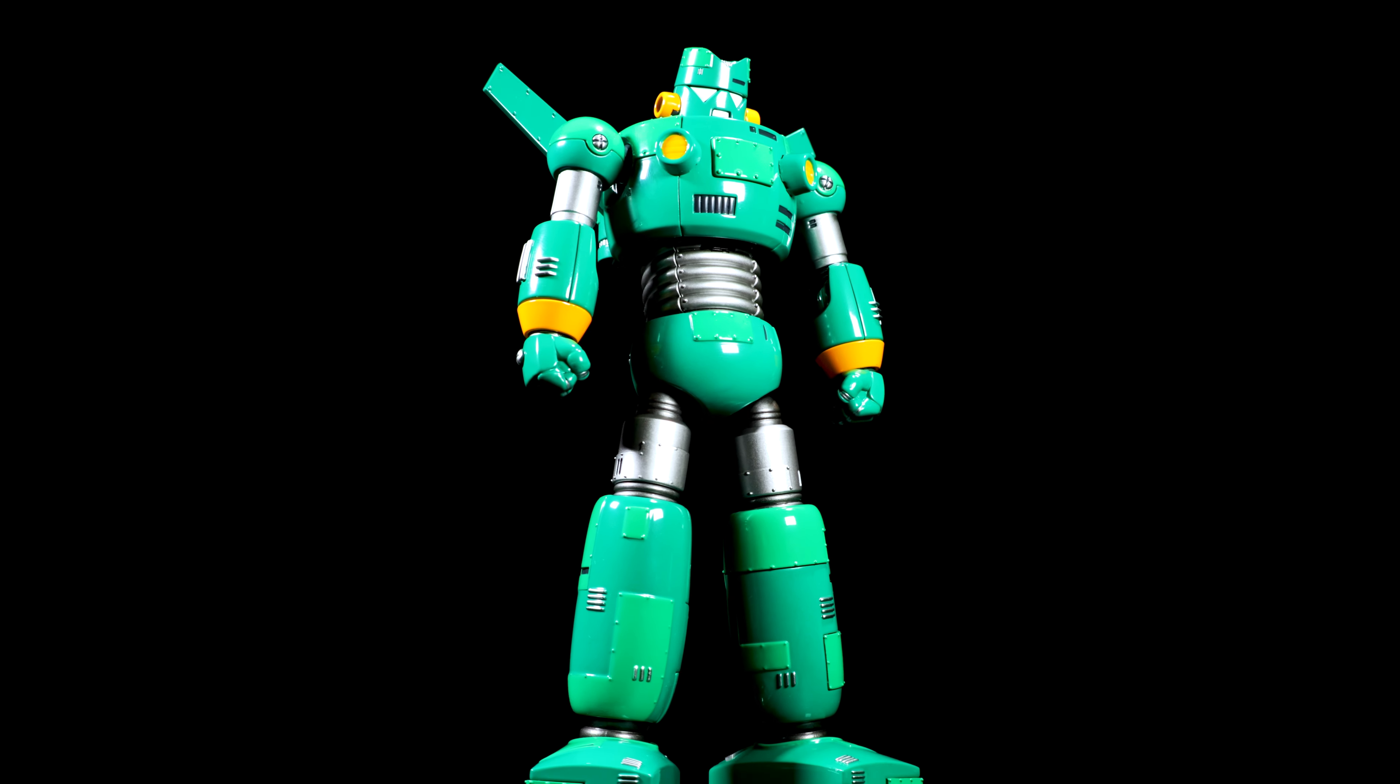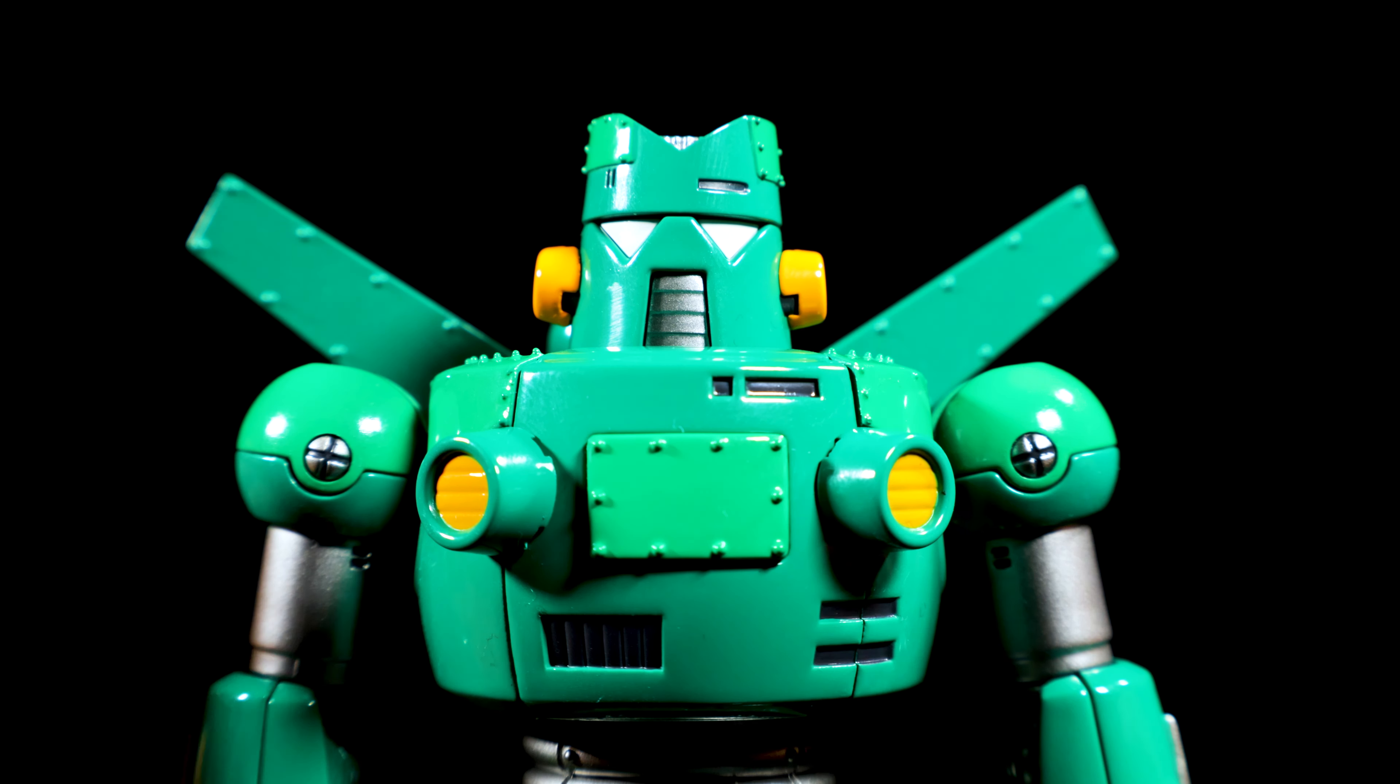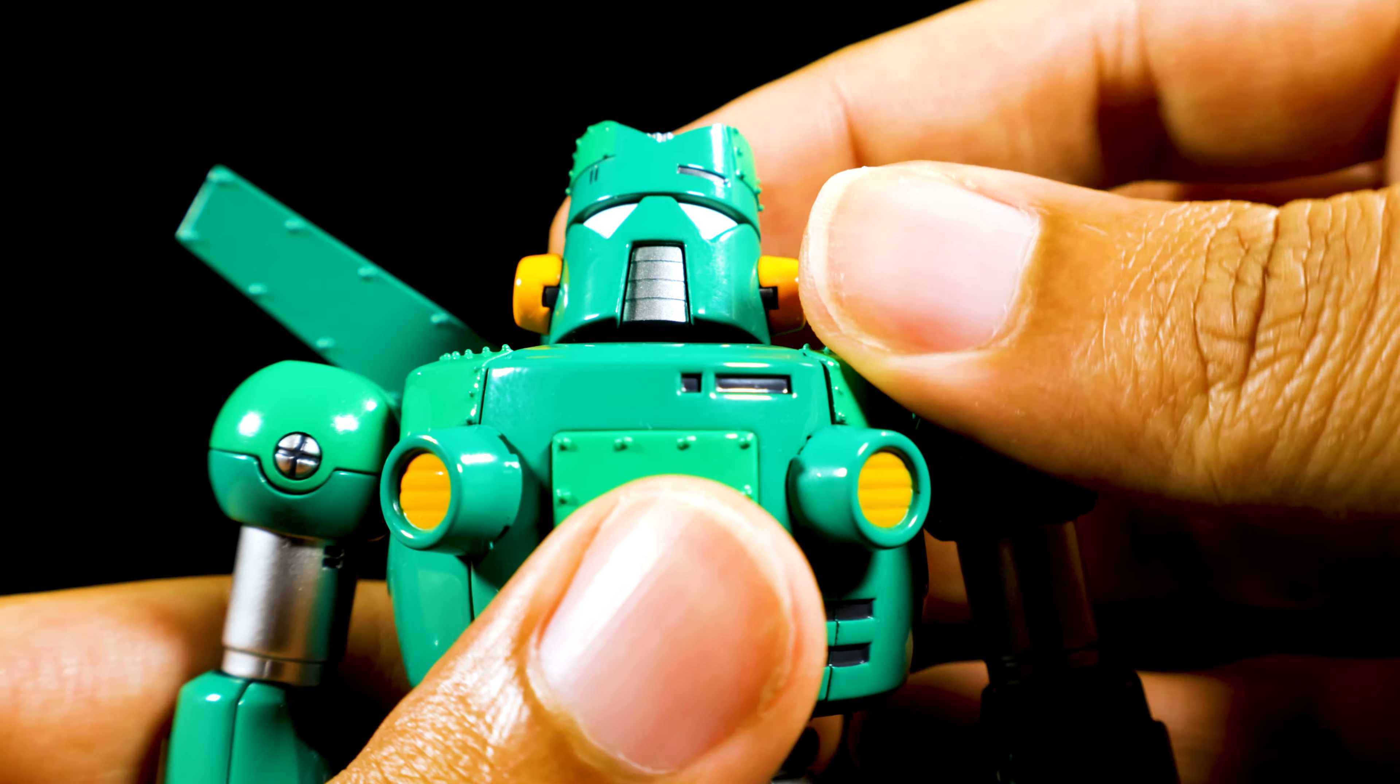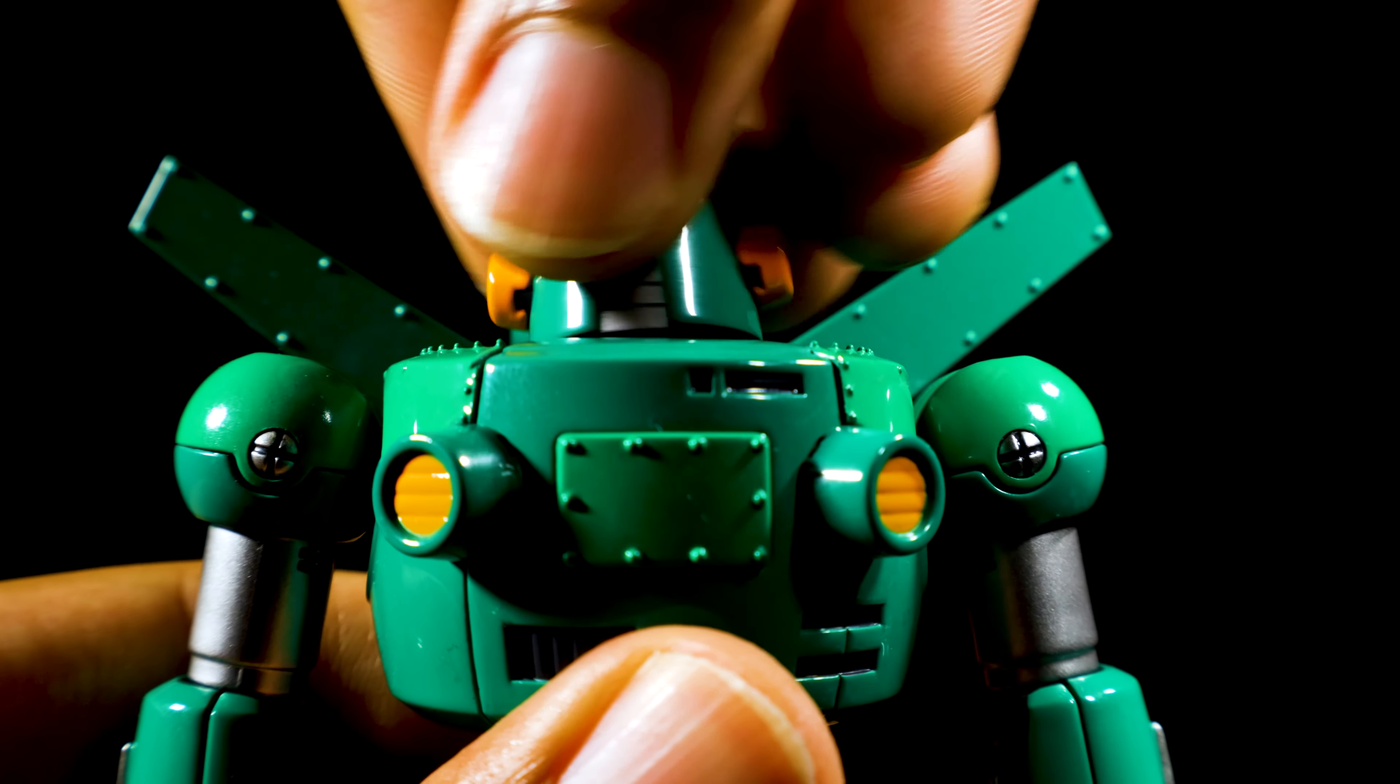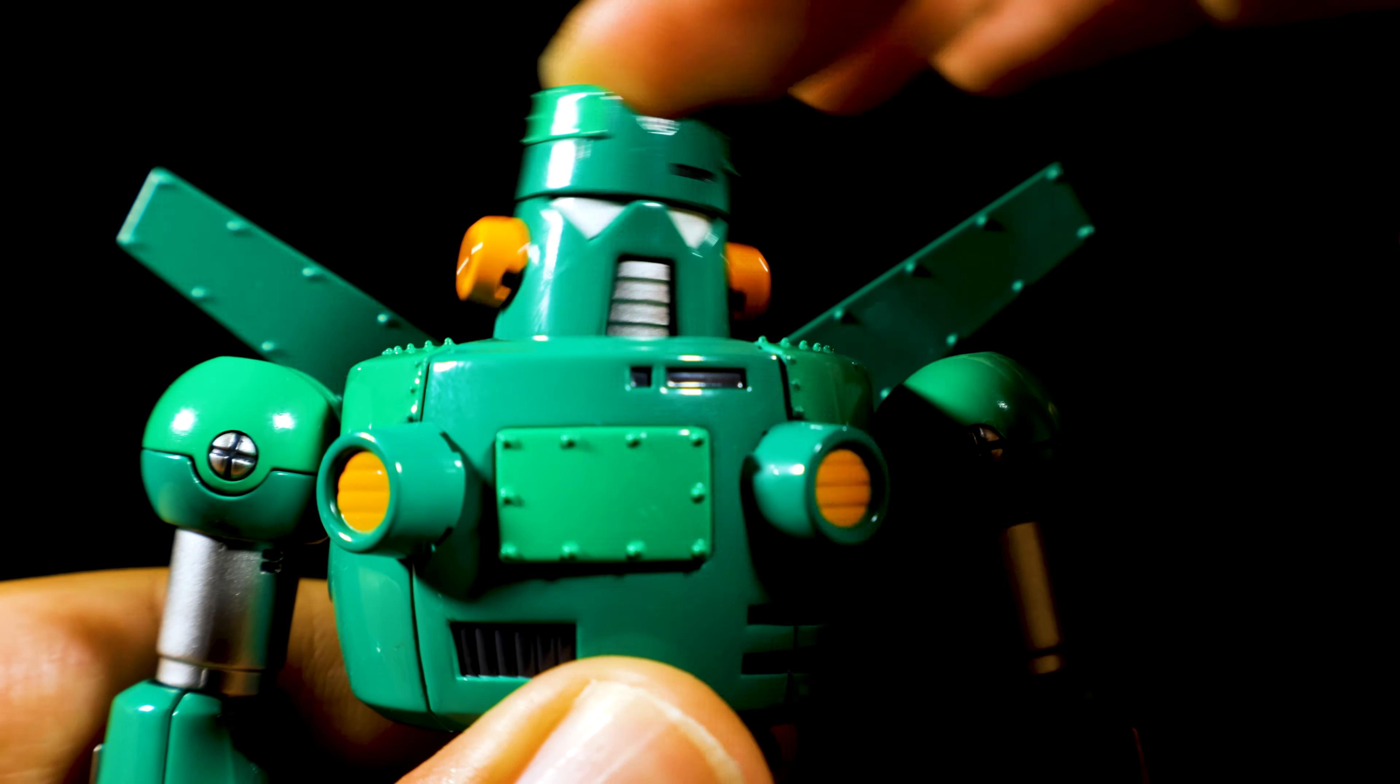The scale checks out, now let's see how well Conton Robo can move. Starting with the head, we can look up, down, left, right. The neck is on a very nice ball joint, you can move the head pretty much all over the place.